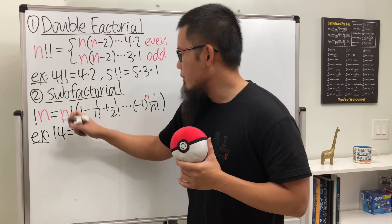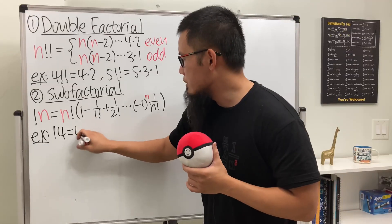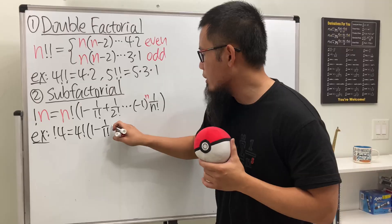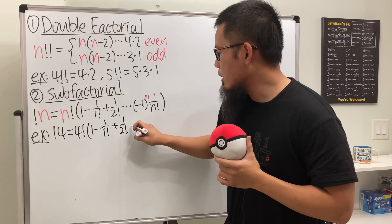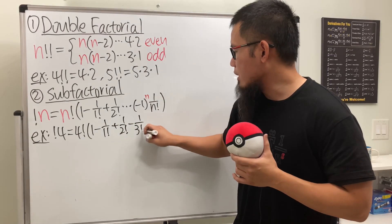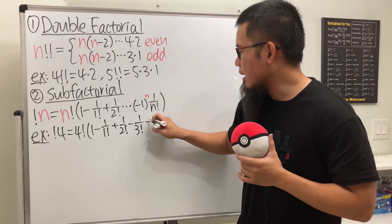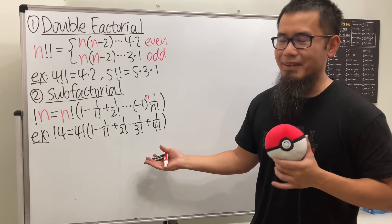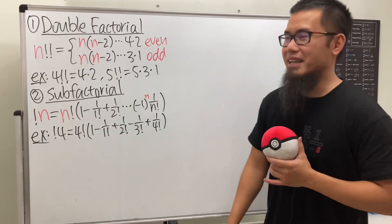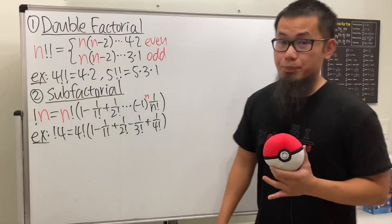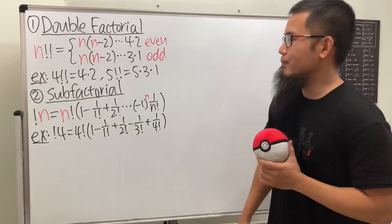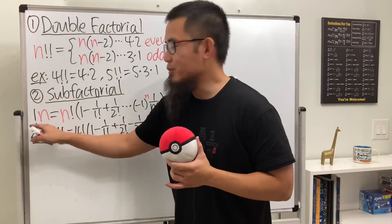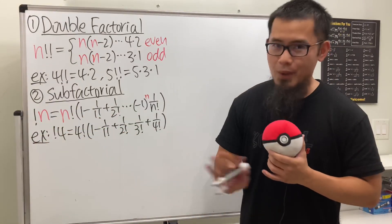Using the formula, sub-factorial of 4 is 4 factorial times the quantity 1 minus 1 over 1 factorial plus 1 over 2 factorial minus 1 over 3 factorial plus 1 over 4 factorial, and the answer is 9.